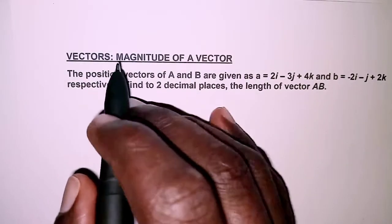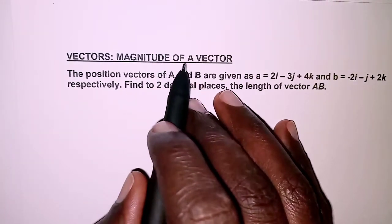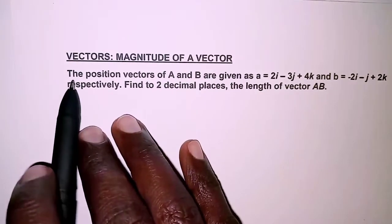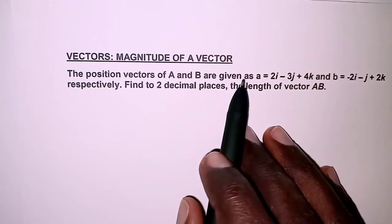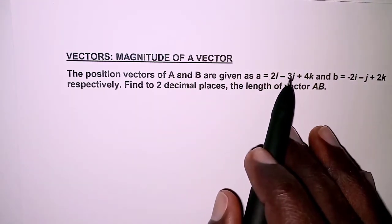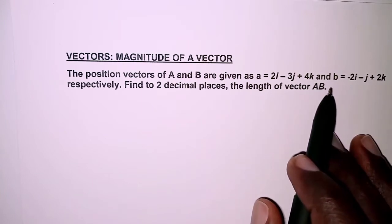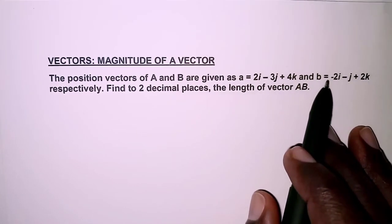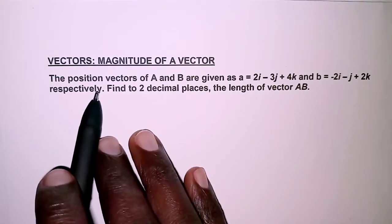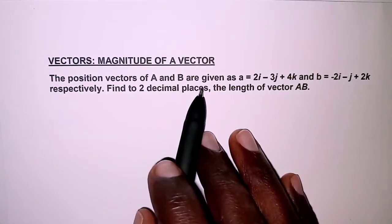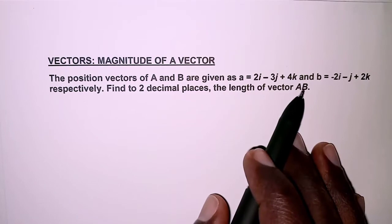The question today is on vectors and we're going to look at the magnitude of a vector. The question reads: the position vectors of A and B are given as a = 2i - 3j + 4k and b = -2i - j + 2k respectively. Find to two decimal places the length of vector AB.